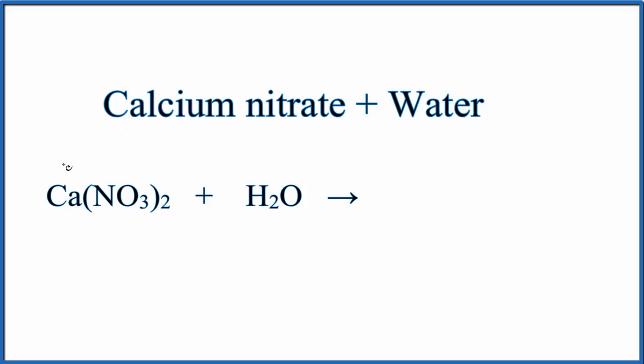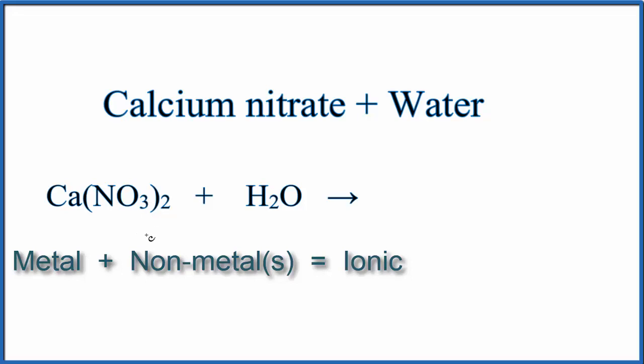So calcium is a metal, and then NO3, those are non-metals. Whenever we have a metal and non-metal or non-metals, that's an ionic compound, and we have to look at the charge on each of the ions.